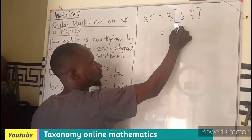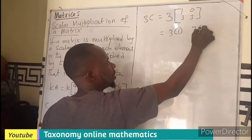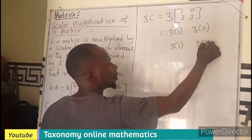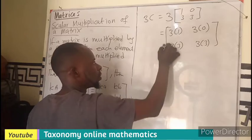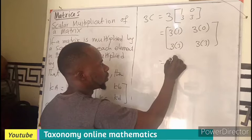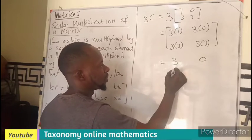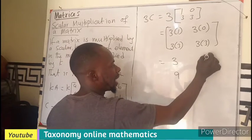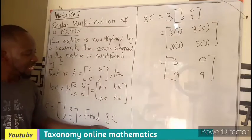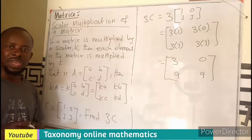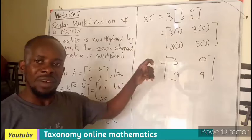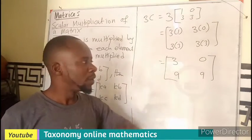Which in this case is going to be three times [1, 3; 0, 3]. You will multiply every element, so that is going to give you [3, 9; 0, 9]. So the value that we are looking for is just what we arrived at. A scalar multiple is just multiplying each of the elements by the scalar.